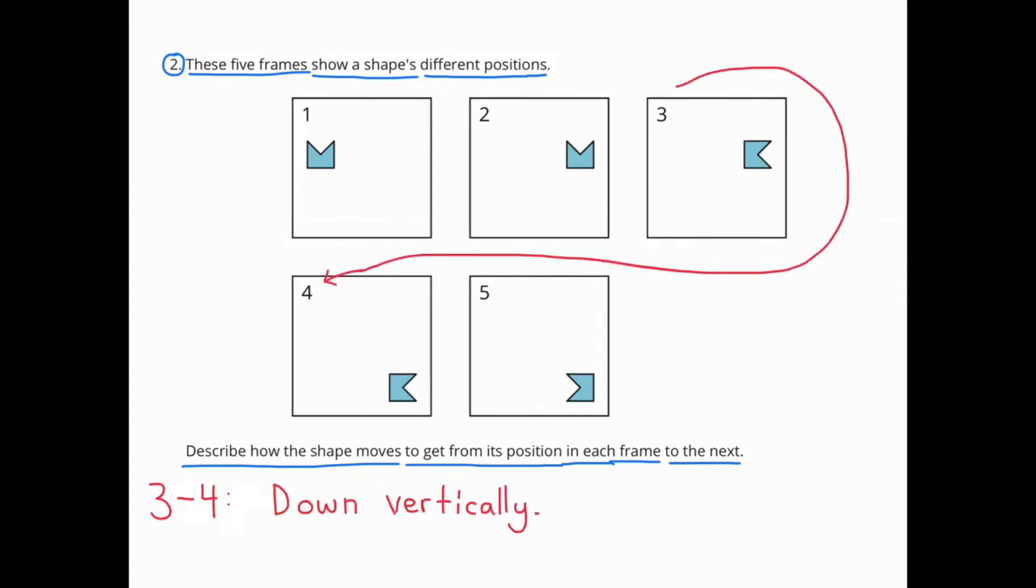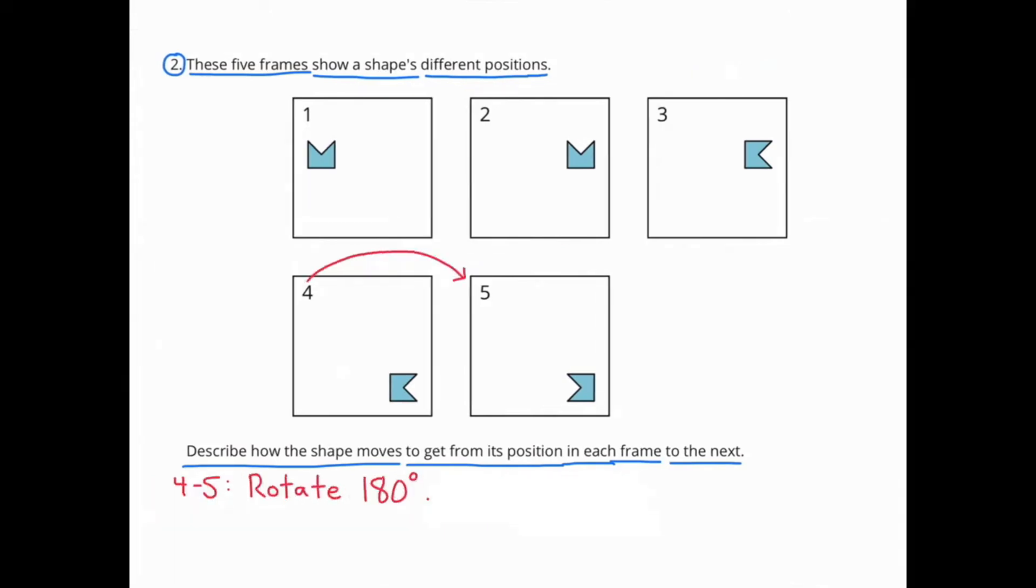From frame 3 to frame 4, the shape moved down vertically. From frame 4 to frame 5, the shape rotated 180 degrees.